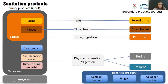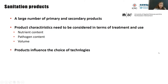Beyond just disposal, sanitation technologies can produce beneficial products such as compost or humus for agriculture, biogas as an energy source, treated water that can be discharged into water bodies, or water suitable for irrigation. The choice of input products and desired output products will ultimately influence which technologies are selected for the sanitation system.